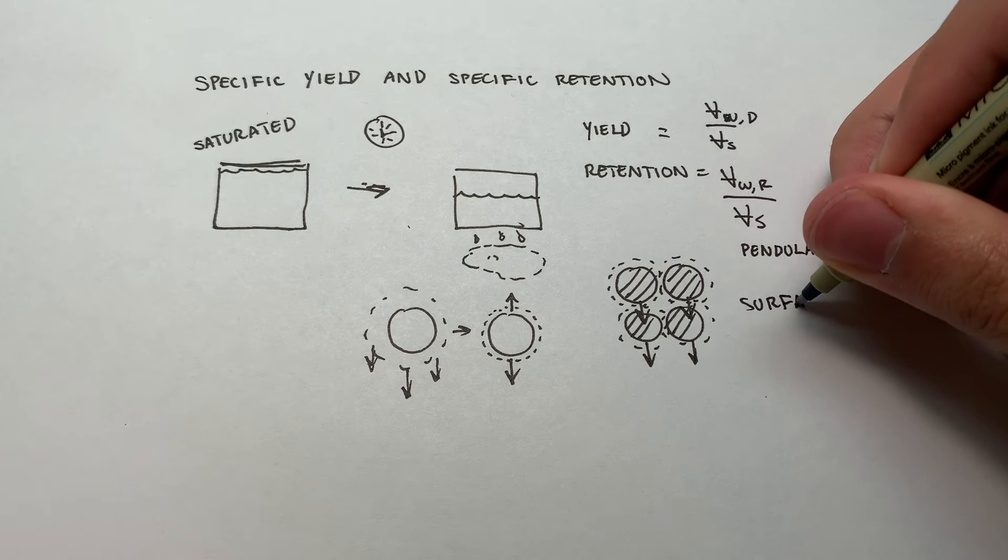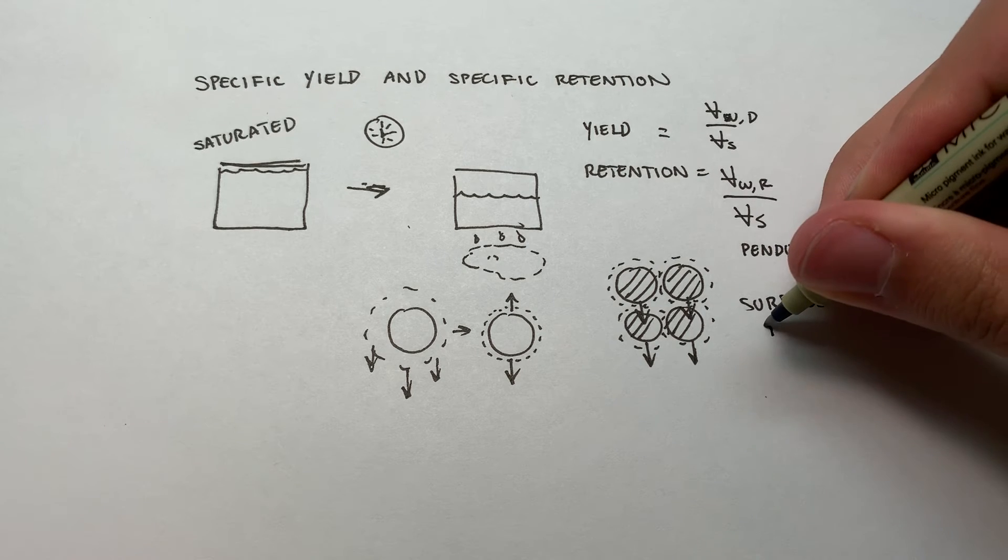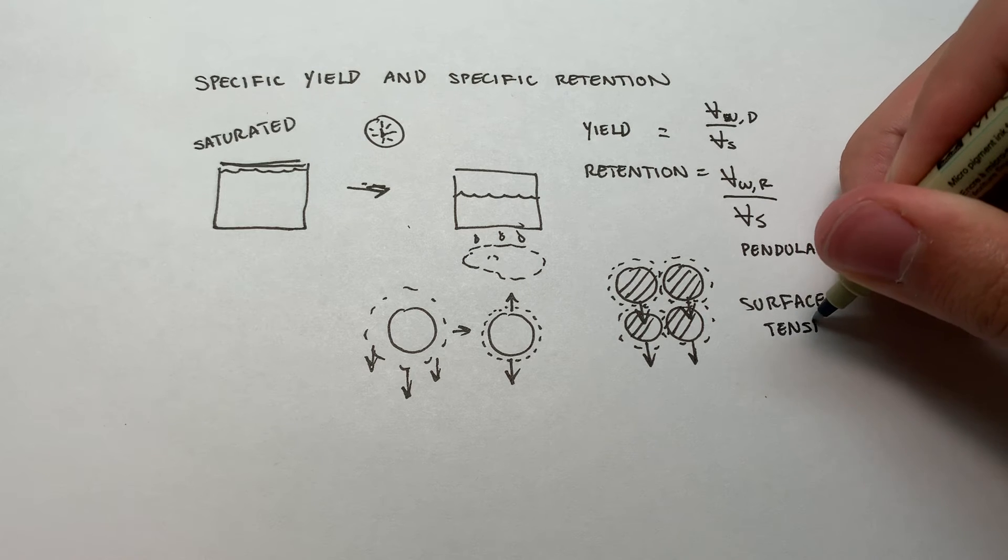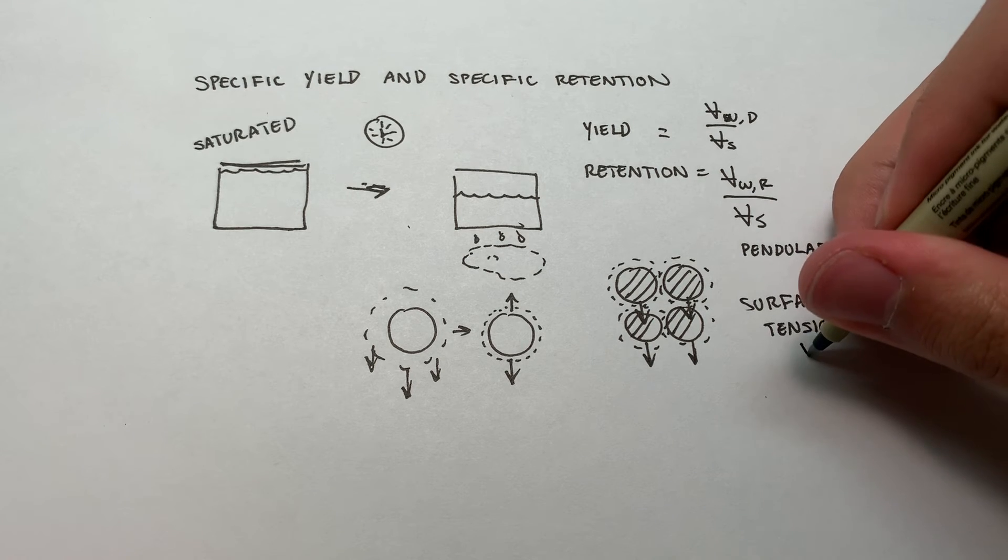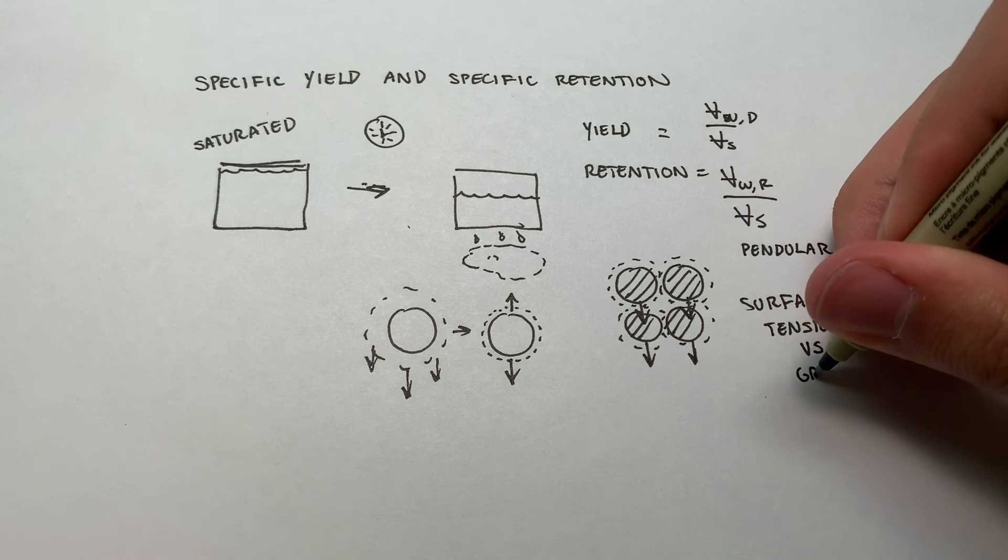So to make that crystal clear, what we have is surface tension, which is pulling it up, balancing gravity.